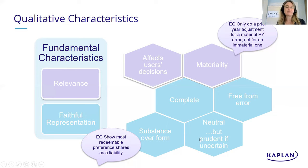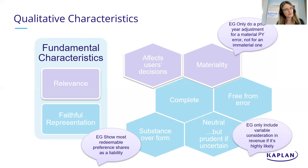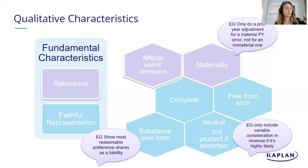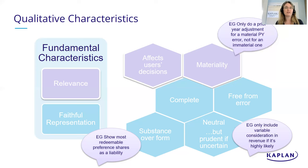However, underneath neutrality, we also apply prudence in conditions of uncertainty. For example, with variable consideration - if I sell something for £1,000 and there's a possible additional £200 if certain targets are hit, that extra £200 is variable consideration. We only recognise variable consideration as revenue if it's very likely we'll receive it. We don't bring it in as revenue if we're not really sure about it - that's applying prudence under uncertainty.